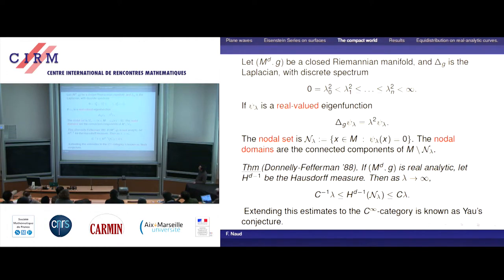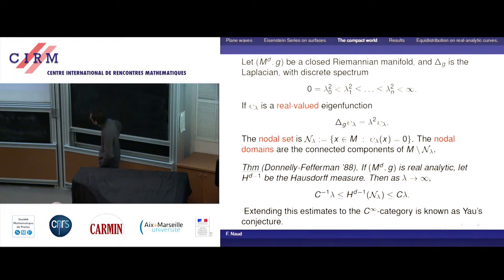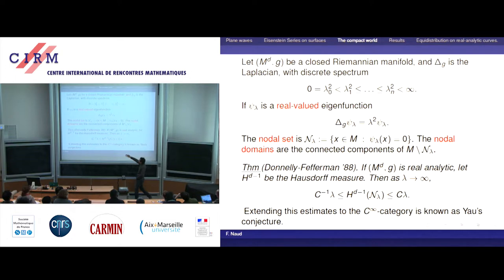In the semi-classical limit, the (d−1)-dimensional measure of nodal sets is comparable to the square root of lambda — just the inverse of the wavelength. This is the Donnelly–Fefferman result. Extending this to the C-infinity case has proven to be extremely hard. The upper bound and lower bound that people know in the most general C-infinity category are very weak. Real analyticity plays a role here.